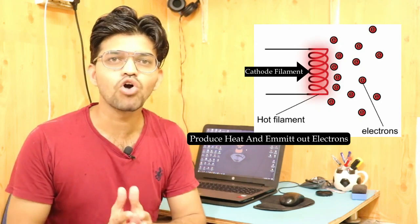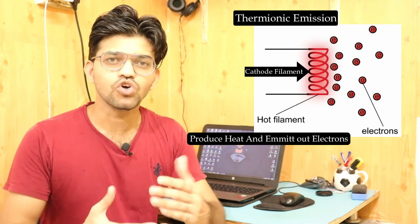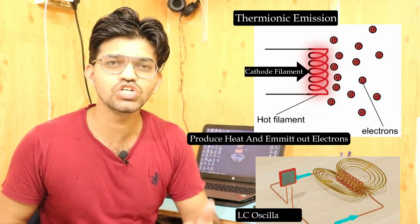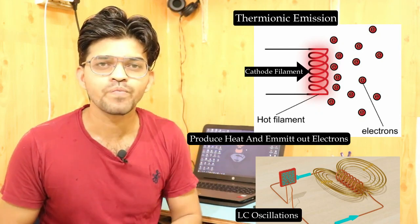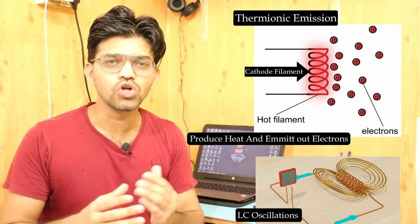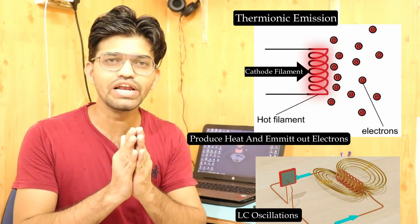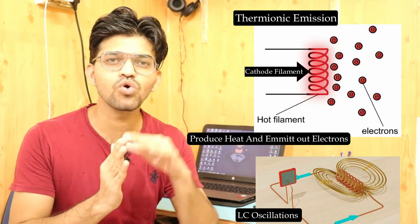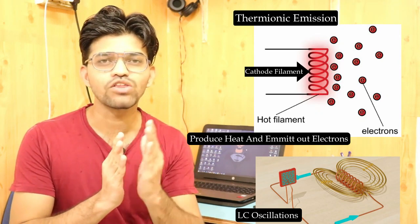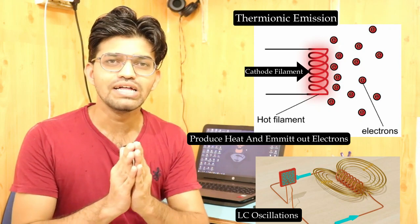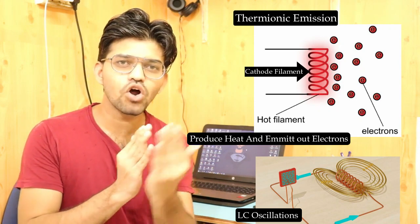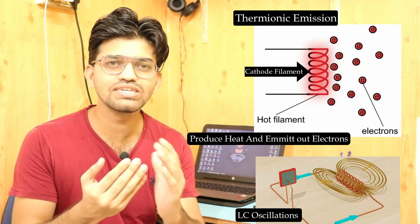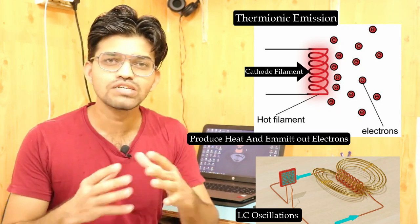That phenomenon is called thermionic emission. So the two basic principles here are LC oscillations and thermionic emission. The electrons are thrown away from the cathode or from that coil. Since they have no other source to attach to, they come back to the cathode.